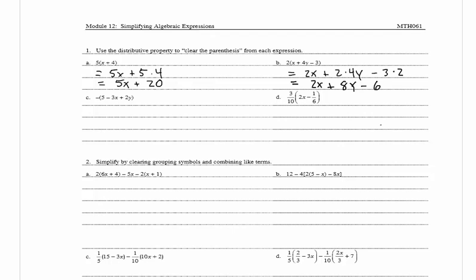In C we have a negative sign out in front of the parentheses. You can think of that as negative 1. So we have negative 1 times (5 minus 3x plus 2y), which gives us negative 5 plus 3x minus 2y. Each sign has been changed because we multiplied by negative 1.